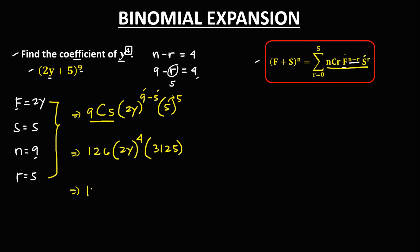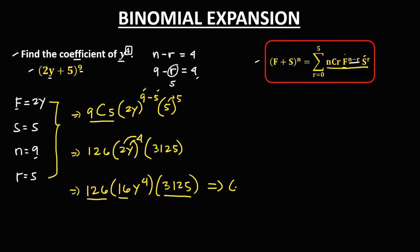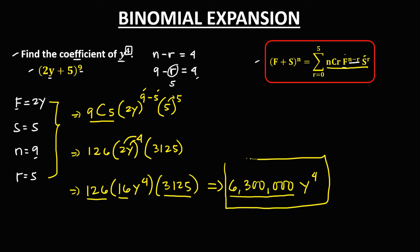Simplify further: 126 times 2 to the power 4, which is 16, then y to the power 4, times 3,125. To find the coefficient of y to the power 4, multiply all the numbers: 126 times 16 times 3,125 equals 6,300,000. Therefore, the coefficient of y to the power 4 is 6,300,000.